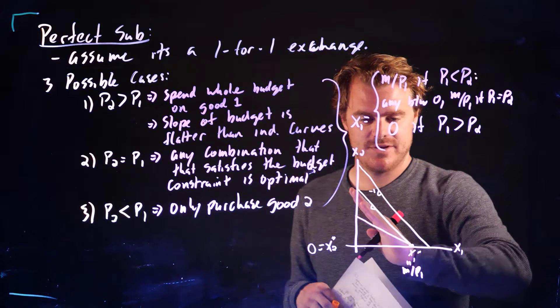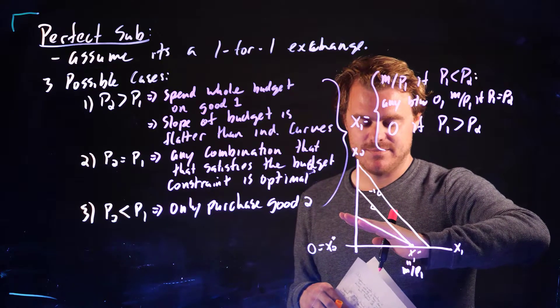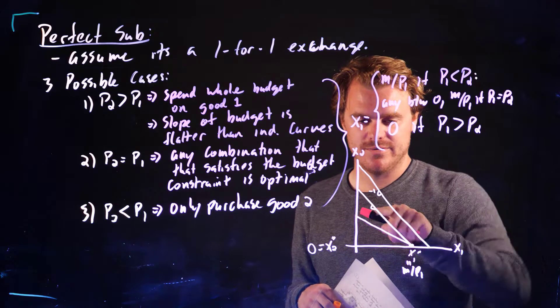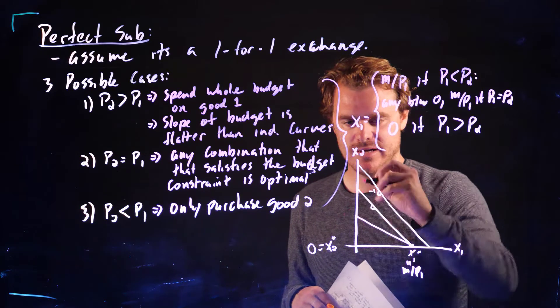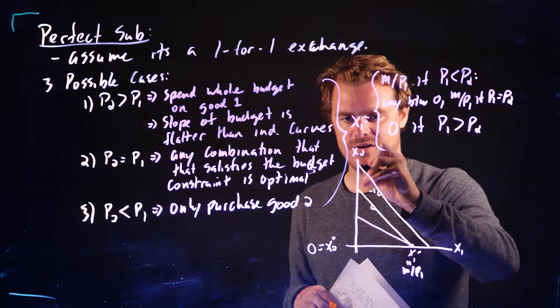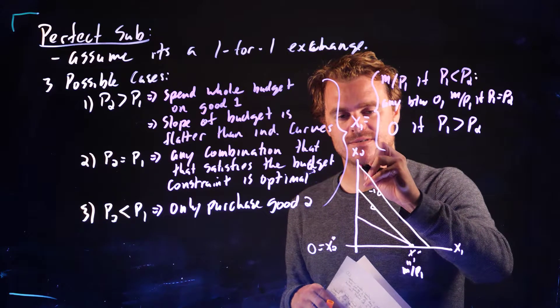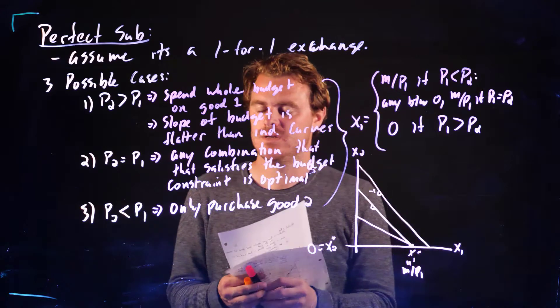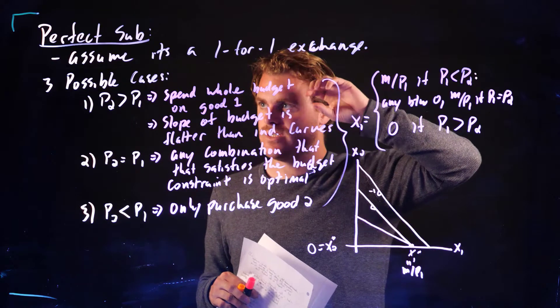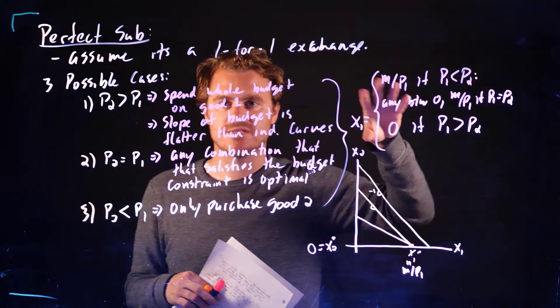And so we're at this point here where X1 star equals M over P1 and X2 star equals zero. The second situation is that these lines are on top of each other, the budget constraint and indifference curve. And the third case is that the budget line is steeper and we're going to have only good X2.